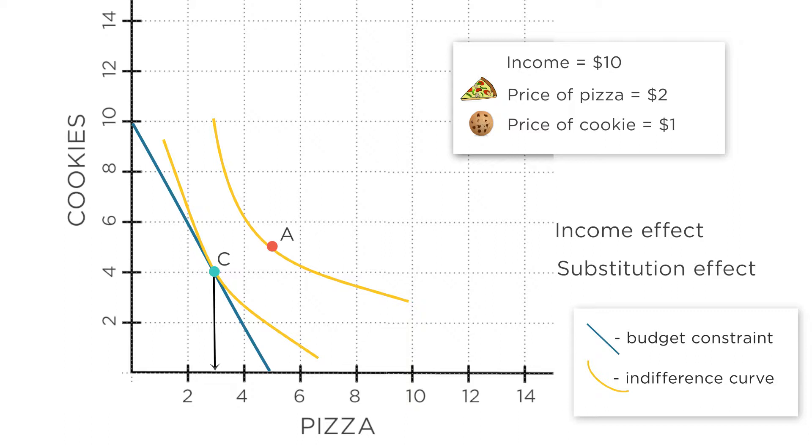We can decompose these effects in two steps. First, what happens if you change prices but keep utility constant? This gets at the substitution effect, which is about the change in price of a good, but not the change in income.